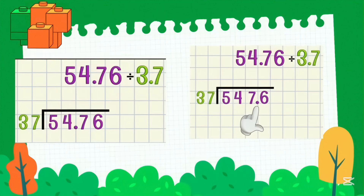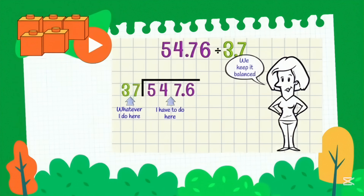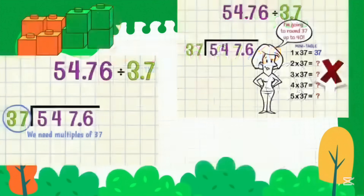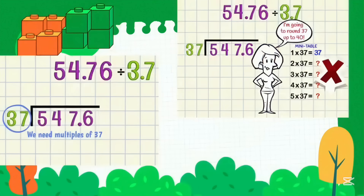We move this decimal point one place to the right and we keep it balanced. Whatever I do here I have to do here. Both numbers are multiplied by 10. The entire problem is scaled up. We have a whole number divisor — we are dividing by 37.